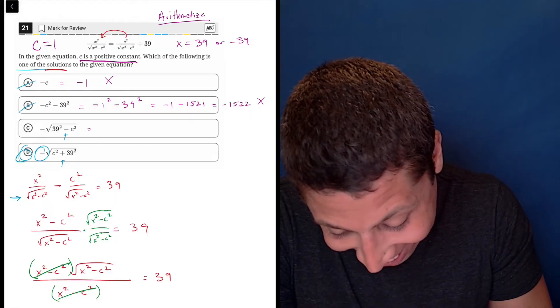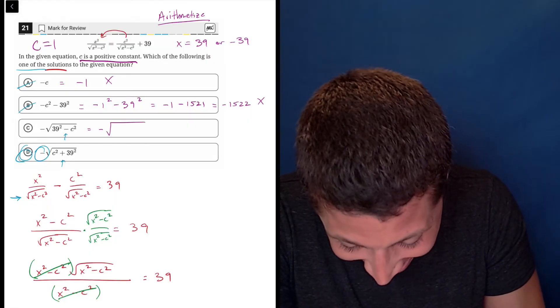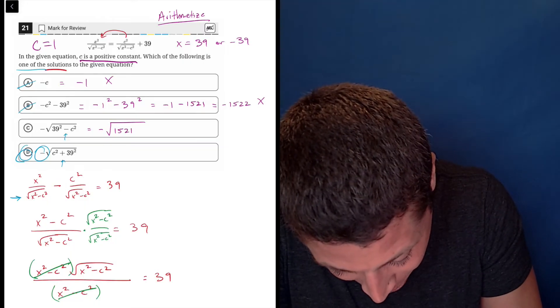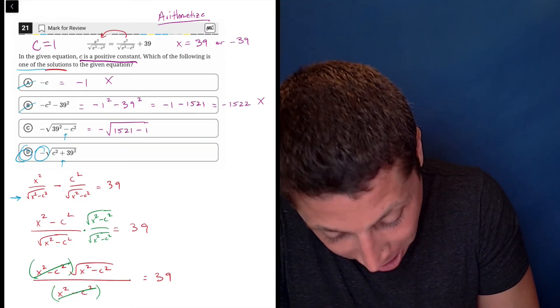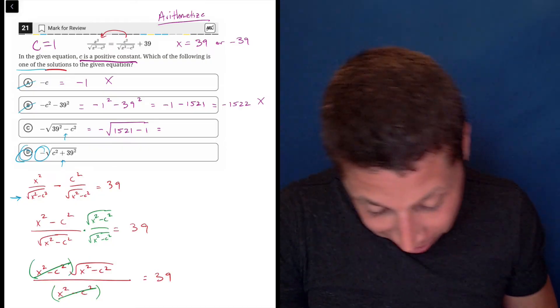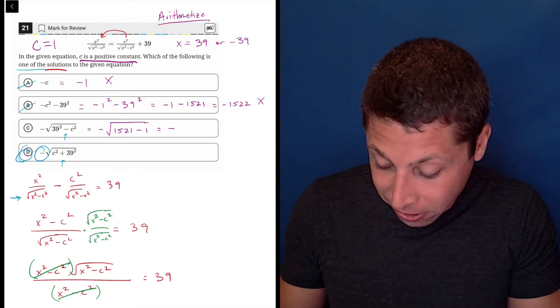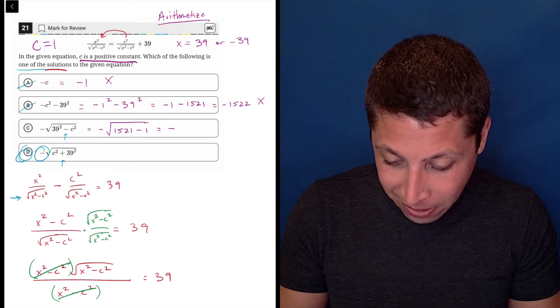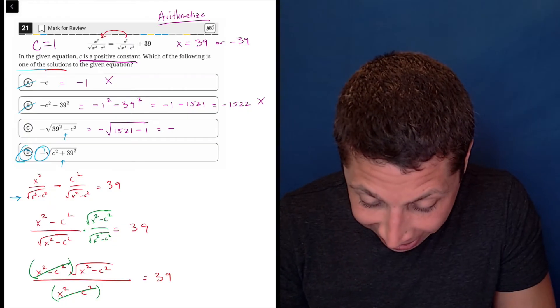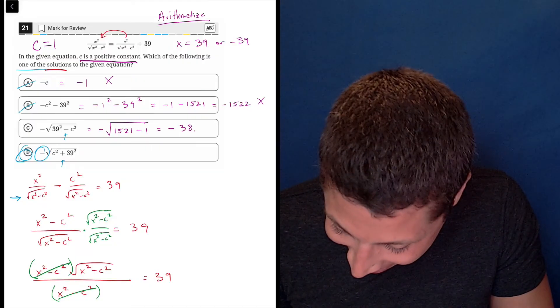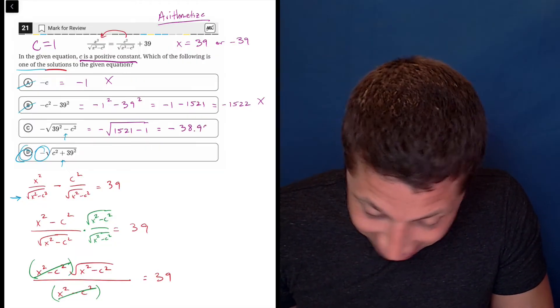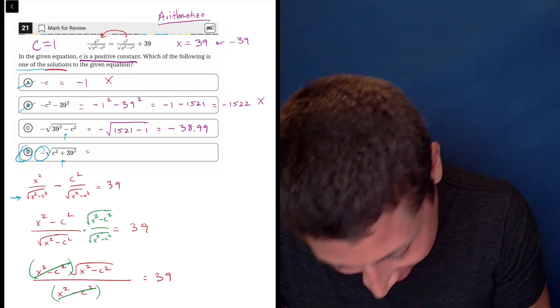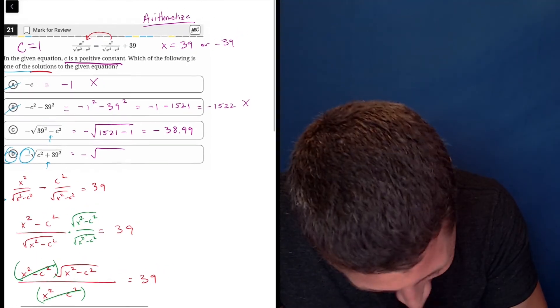Let's see if this works. I'm really nervous. This might not work. So this is going to be negative the square root of 39 squared. We said that's 1521 minus 1 squared. So that's 1. So that's the square root, negative square root of 1520. So 1520 square root is a crazy number. So this is negative. Oh, this is not going to work the way I wanted. 38.99. So it's so close to negative 39. Oh, this isn't going to work.